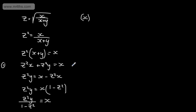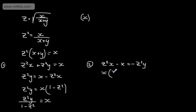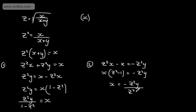At this stage I could have taken a different approach. What I could have done is subtracted X from both sides and subtracted Z squared Y from both sides. That would give me Z squared X minus X is equal to minus Z squared Y. I would then factor X on the left-hand side, giving Z squared minus 1, leaving minus Z squared Y. Dividing through by the bracket content gives minus Z squared Y over the quantity Z squared minus 1.